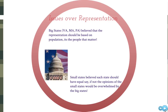Let's recap from the last video where we talked about the issues over representation and the fierce debate happening at the Convention. Big states with large populations like Virginia, Massachusetts, and Pennsylvania believed that representation in Congress should be based on population — the only way to make the people matter and ensure a fair vote. On the flip side, small states believed that all states should have equal say, so that the opinions of small states wouldn't be overwhelmed by the big states.